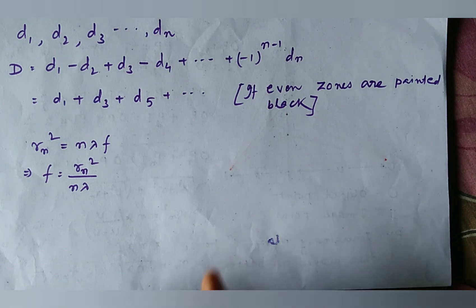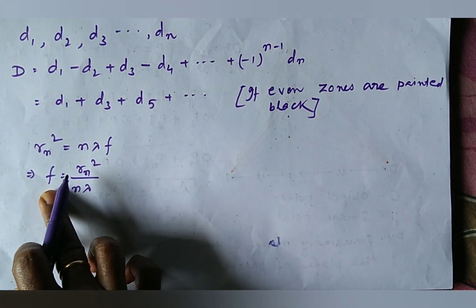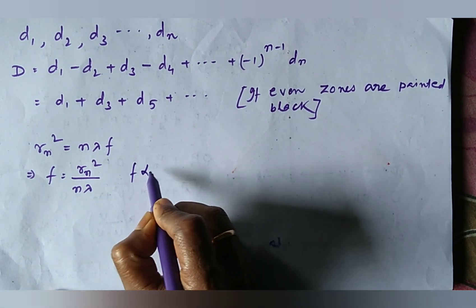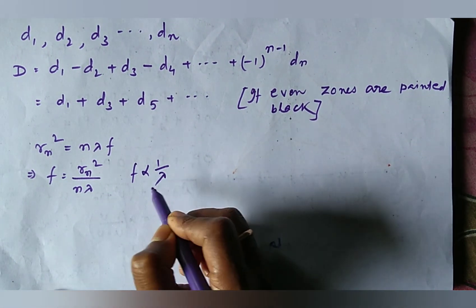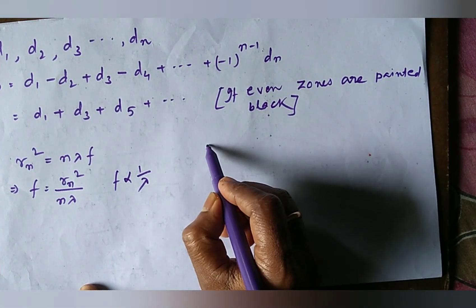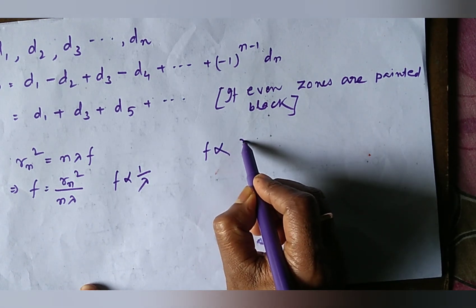Again, look this equation. The focal length of a zone plate is proportional to 1 by lambda. Whereas, for the converging lens, f will be proportional to lambda.